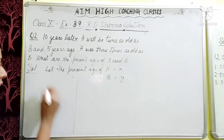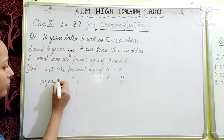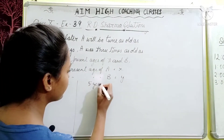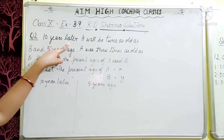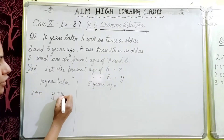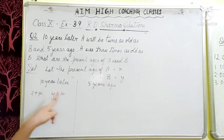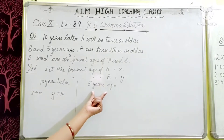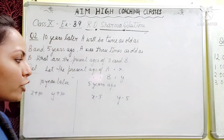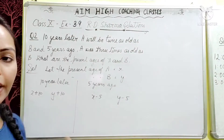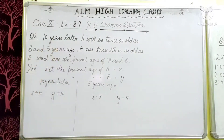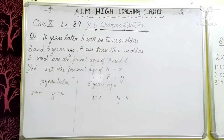There are two comparisons: one for 10 years later and one for 5 years ago. For 10 years later, ages become x + 10 and y + 10. For 5 years ago, ages become x − 5 and y − 5. We will handle these two conditions in separate parts.